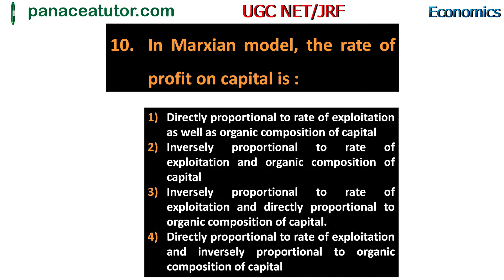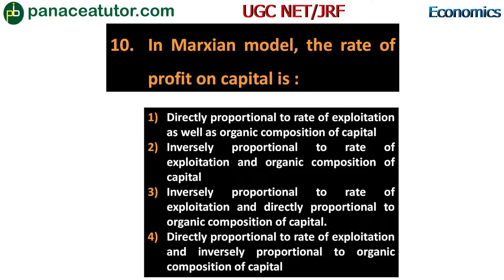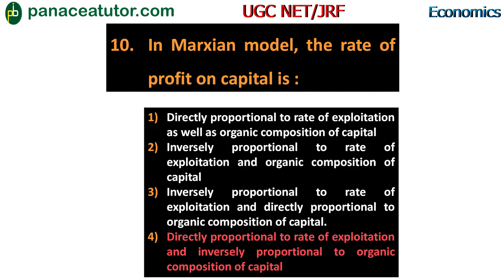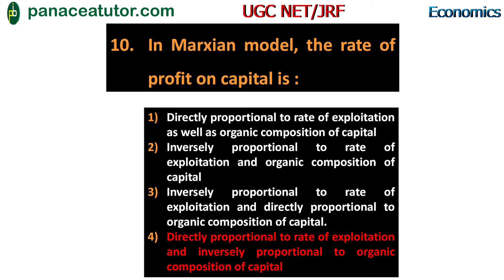Next question: in the Marxian model, the rate of profit on capital is - option one, directly proportional to rate of exploitation as well as organic composition of capital; option two, inversely proportional to both; option three, inversely proportional to rate of exploitation and directly proportional to organic composition of capital; option four, directly proportional to rate of exploitation and inversely proportional to organic composition of capital. The answer is option four - rate of profit is directly proportional to rate of exploitation and inversely proportional to organic composition of capital.